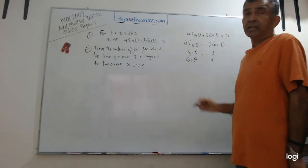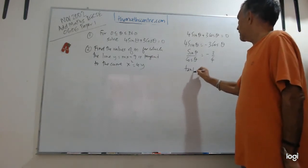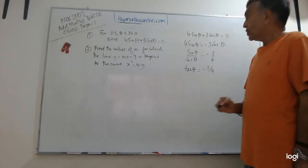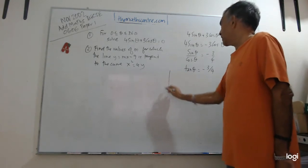Therefore, what is sin theta over cos theta? Tangent theta. Tangent theta is minus 3 over 4. So tangent is negative. Let's go ahead and look at the quadrants.